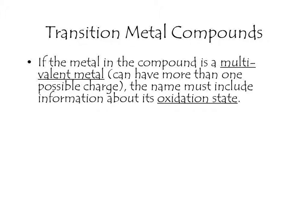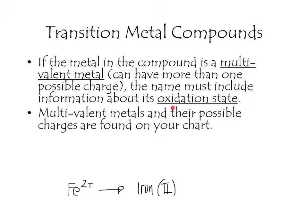How you typically do that, you would have to write a Roman numeral. For example, take Fe2+, which is iron with a charge of 2+. When we write the name, it has to have a Roman numeral — iron with Roman numeral 2. The multivalent metals are going to be found on the chart provided in class, along with their possible charges.